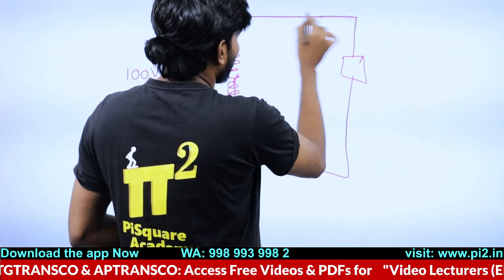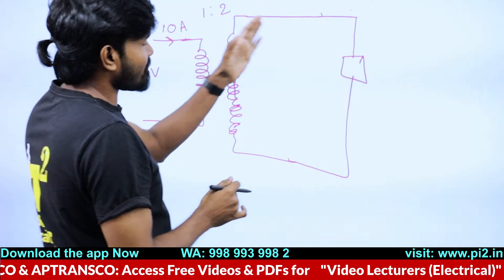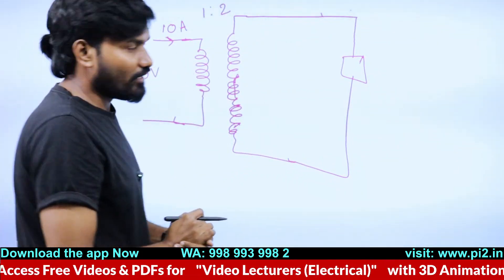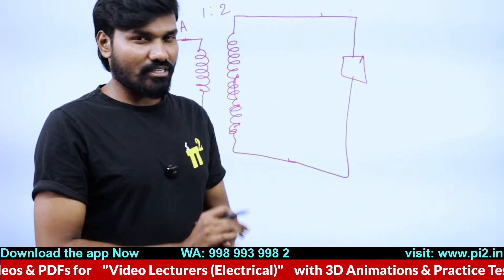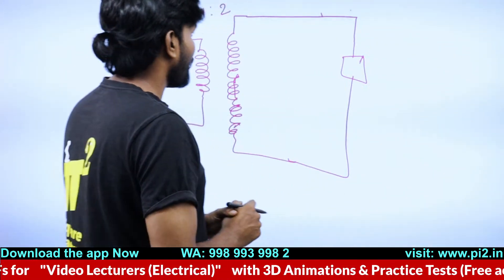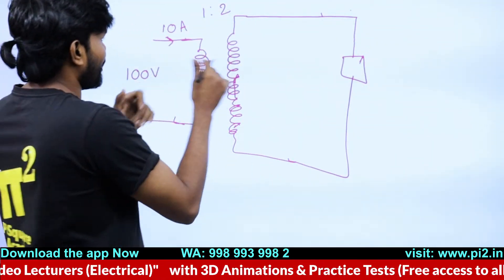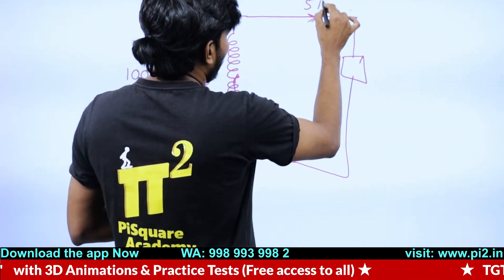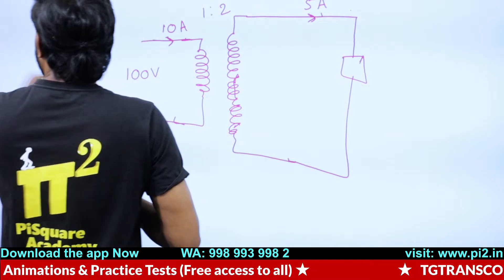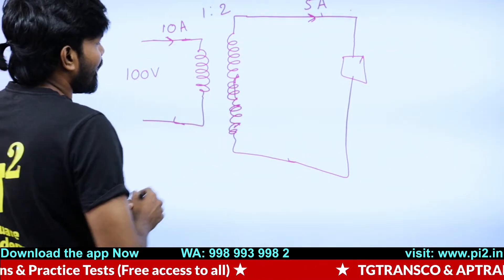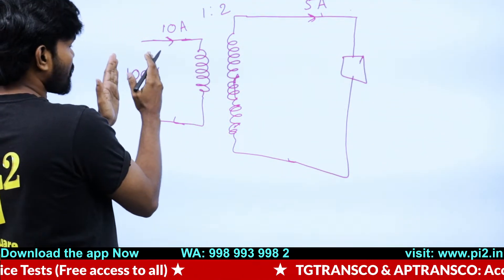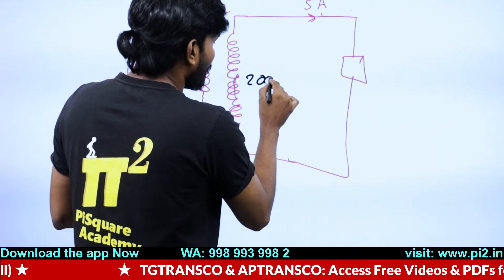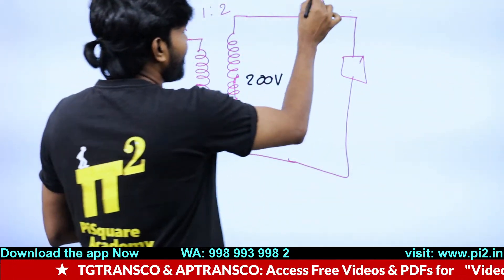What will be the primary current? If this connection is made, what will be this? Once this connection is made, then only this current will flow. Let's take the ideal case — an ideal transformer. The current here is pretty much known to you: 5 ampere. So here we have 100 volts, 10 ampere on the primary, and 200 volts, 5 ampere on the secondary.